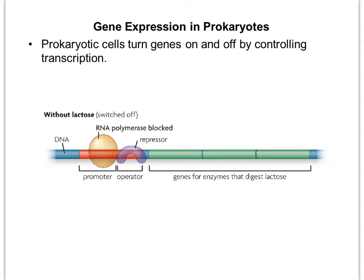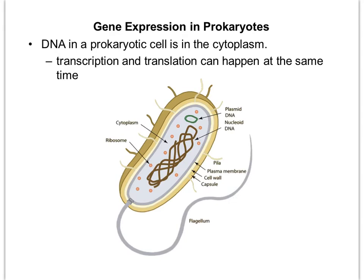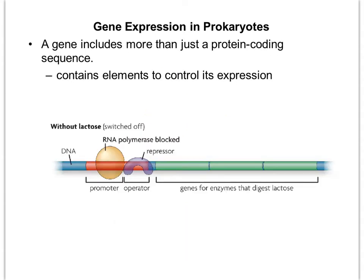Prokaryotic cells turn genes on and off by controlling transcription. The DNA in a prokaryotic cell is just in the cytoplasm since there is no nucleus, which means that transcription and translation can actually occur at the same time. A gene actually includes more than just a protein coding sequence — it also contains elements that are going to control its expression.